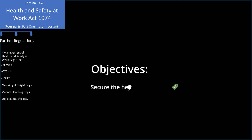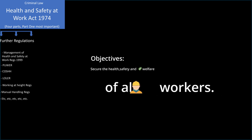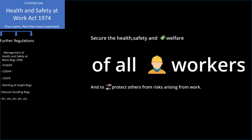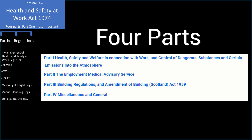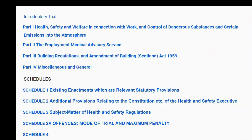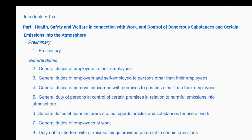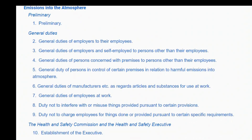The objectives of the act are to secure the health, safety and welfare of all persons at work, and to protect others against the risk arising from workplace activities. The act is divided into four parts and there are a total of 84 different sections. Part one is the most important and consists of 54 sections.